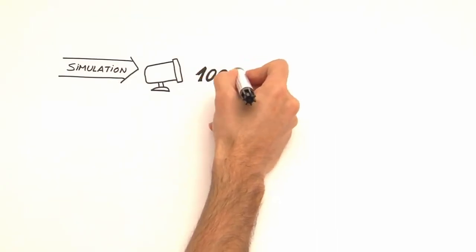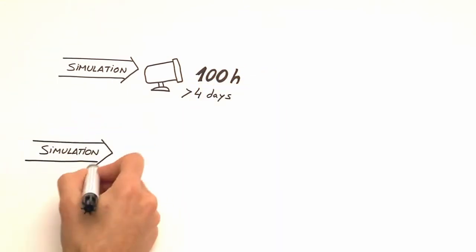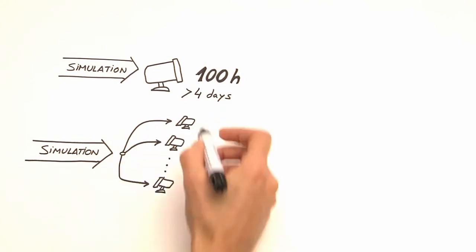To perform a radiation treatment simulation on a single computer or CPU would require more than 100 hours. That's over four days of continuously processing data.